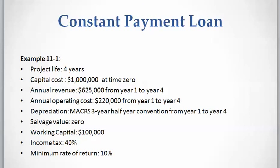Let's work on this example using an Excel spreadsheet. The life of the project is four years, the capital cost required is $1 million, annual revenue of $625,000, annual operating cost of $220,000 from year one to year four, the depreciation method is MACRS three-year half-year convention, salvage zero, working capital of $100,000, income tax of 40%, and discount rate of 10%.